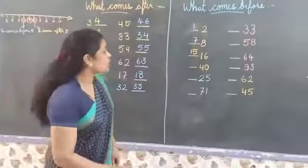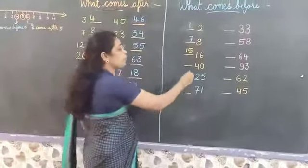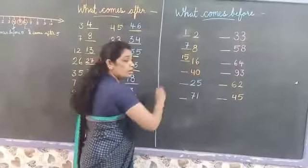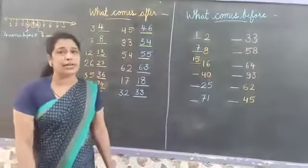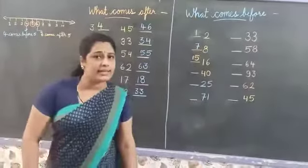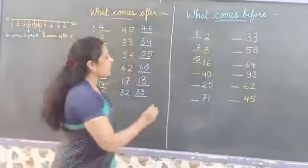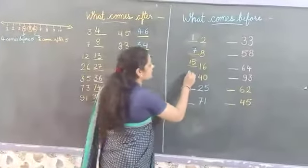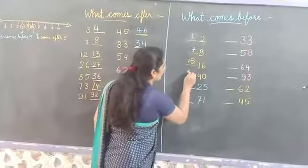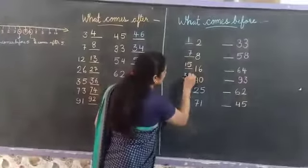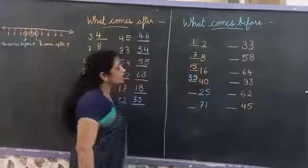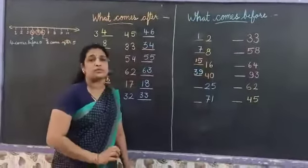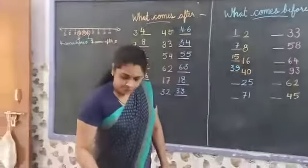And next number is 40. 40 ke pehle kya hota hai? 3, 9 — that is 39. 39 comes before 40.